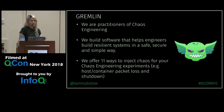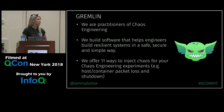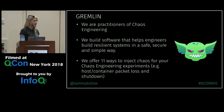A little about Gremlin: we're practitioners of chaos engineering. We build software that helps engineers build resilient systems in a safe, secure, and simple way. We offer 11 different ways to inject chaos for experiments - at the host level or container level - including packet loss and shutdown. If you've heard of Chaos Monkey, that's one of the attacks we have. Gremlin is an agent that runs on your host or inside a container, similar to rolling out Datadog or New Relic. You don't need to change your code or infrastructure.